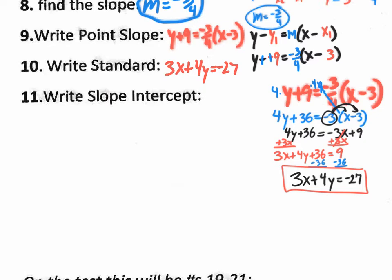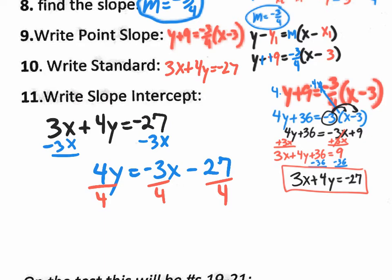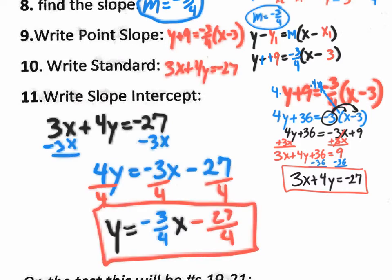For slope-intercept form, take the standard form equation 3x + 4y = -27 and rewrite it in y = mx + b form. Subtract 3x to get 4y = -3x - 27, then divide by 4. The slope-intercept form is y = -3/4 x - 27/4. It's fine to end up with a fraction; on the test this one also gives a fraction.